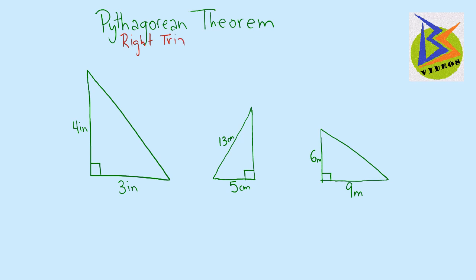Let's take a look first at what the Pythagorean Theorem says. It says that a squared plus b squared equals c squared, where a and b are legs, and c is the hypotenuse, which is always the longest side and is always opposite our right angle.